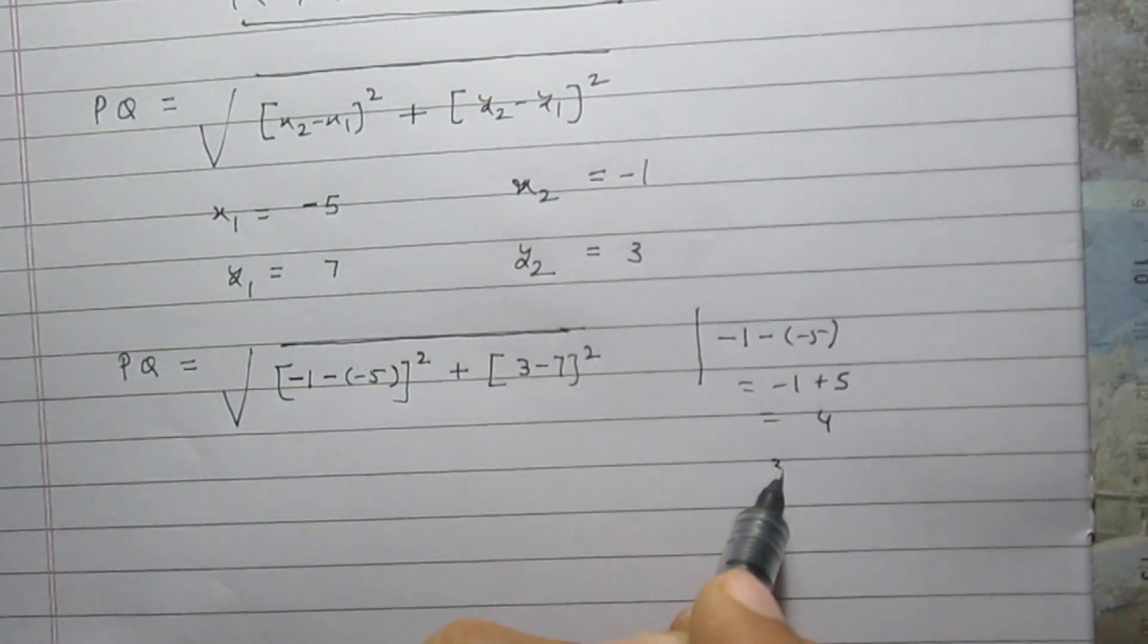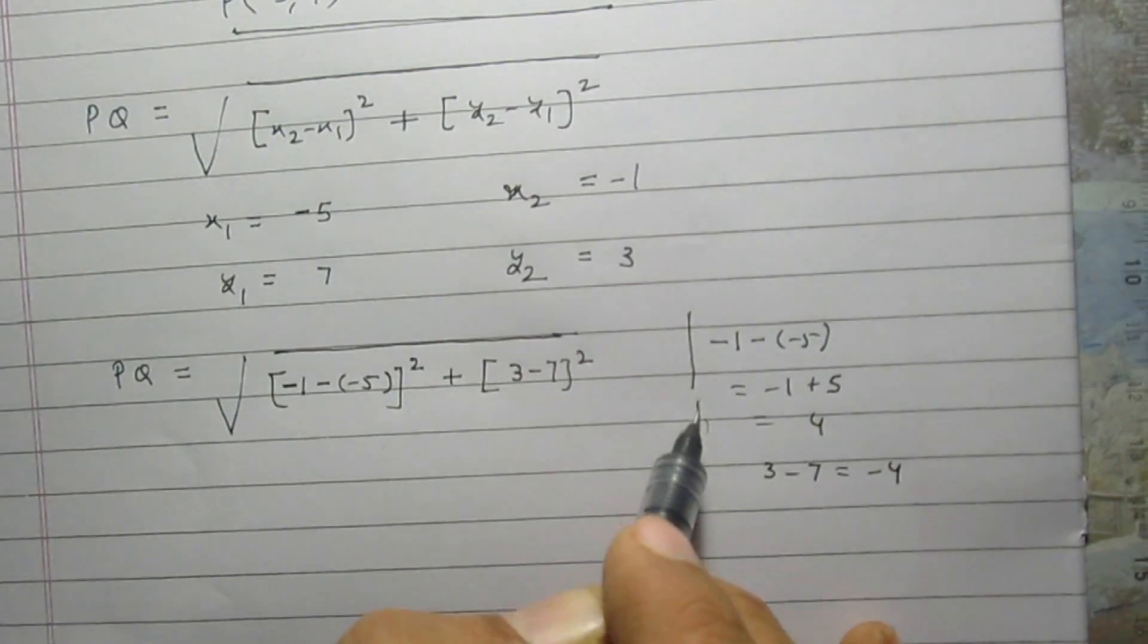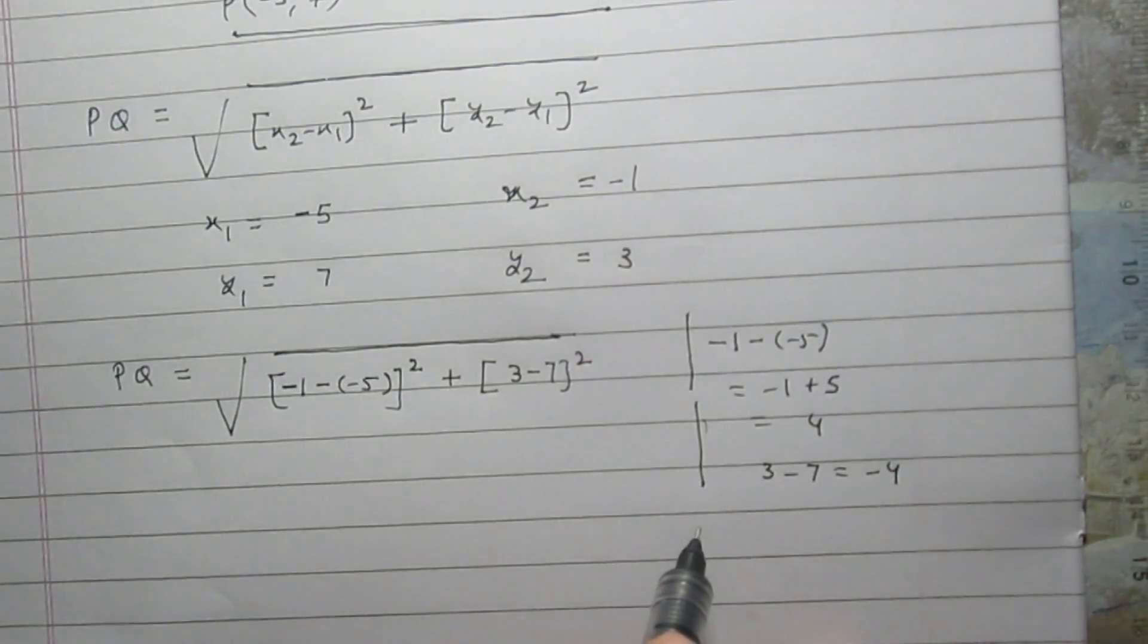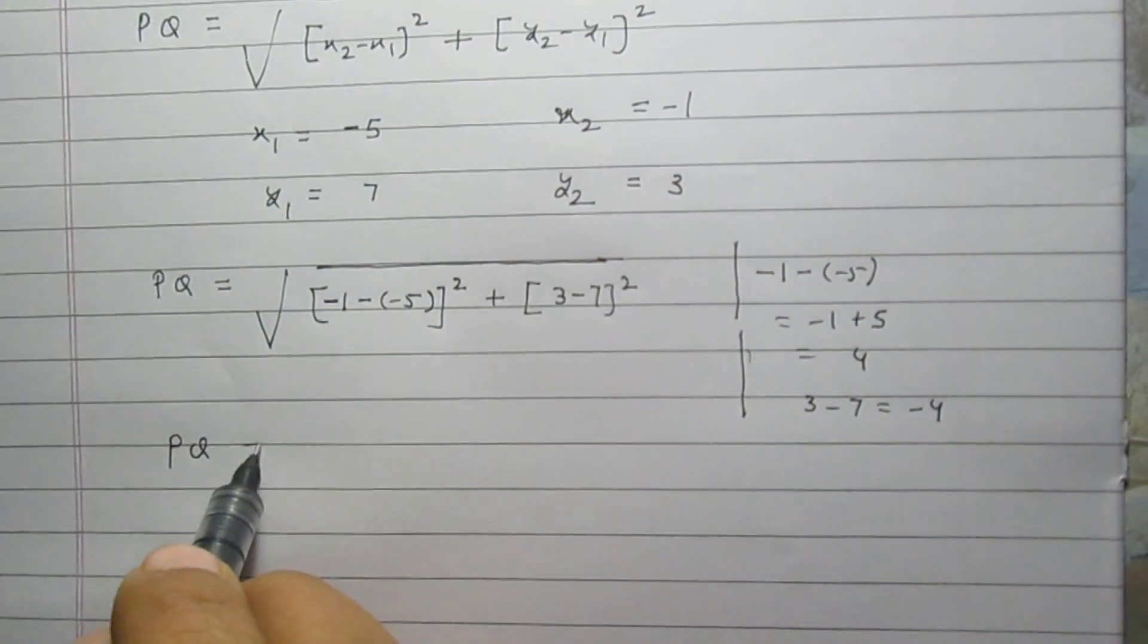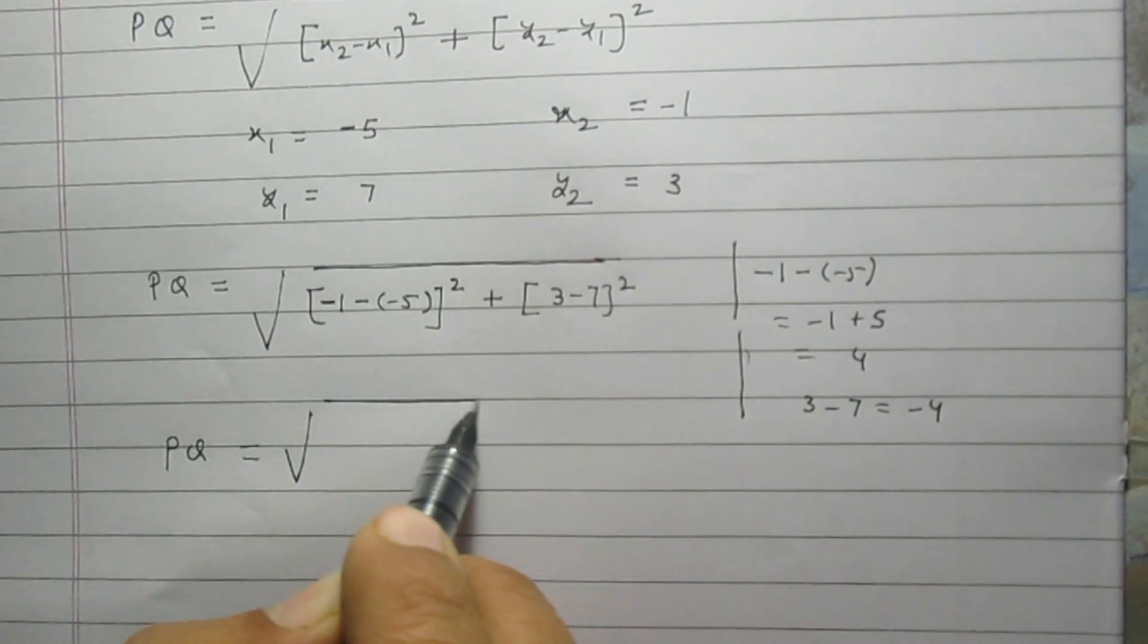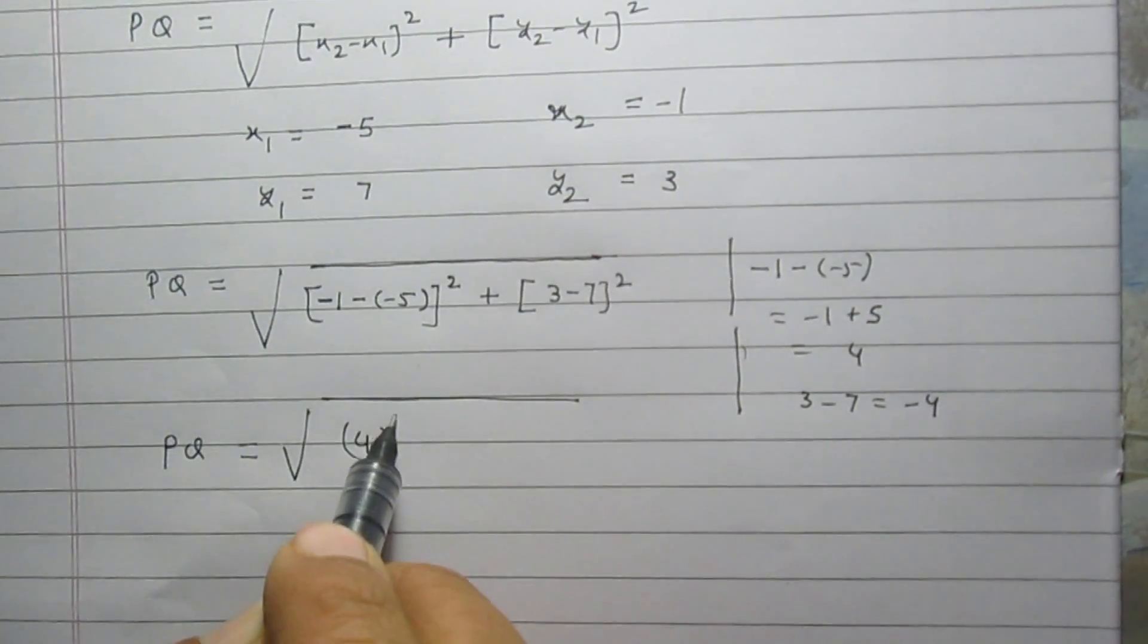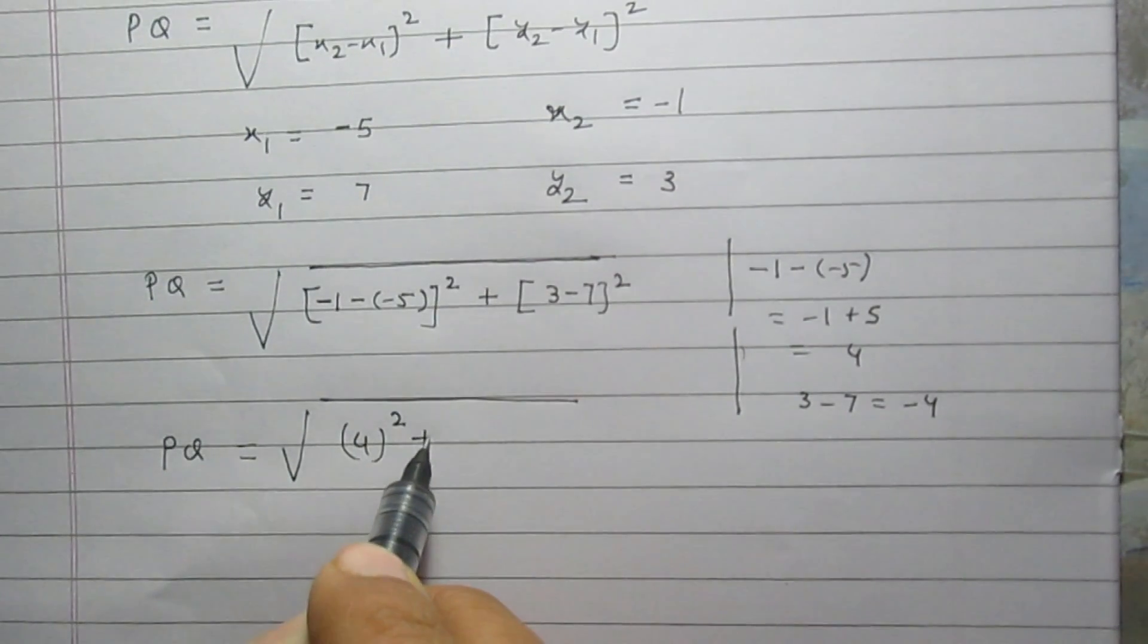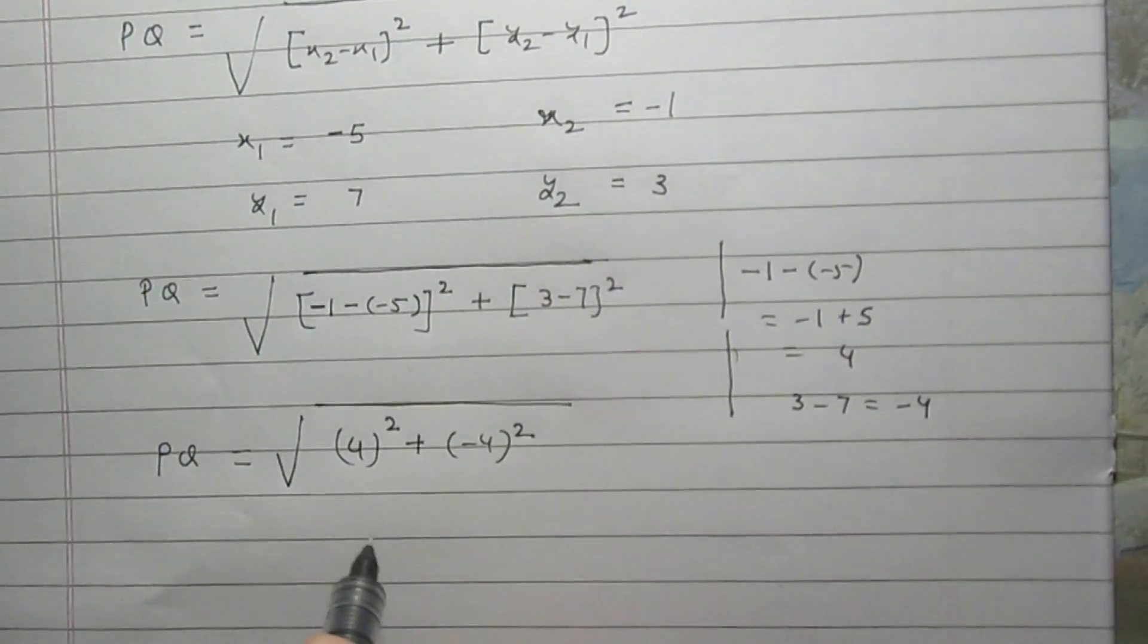Similarly, 3 - 7 is equal to -4. So, on simplifying it further, we get PQ is equal to the square root of (4)² plus (-4)².